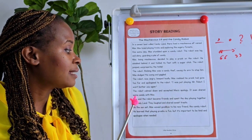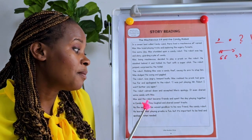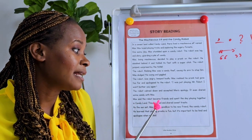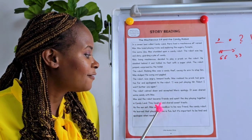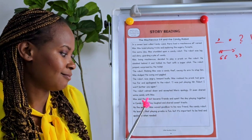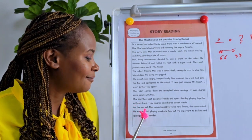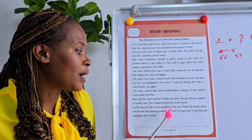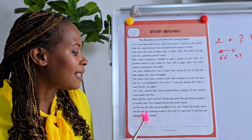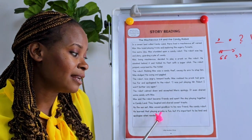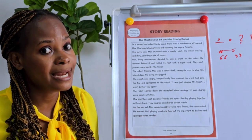The robot even shared some candy with Max. Max and the robot became friends and spent the day playing together in Candyland. They loved and shared sweet treats. As the sun set, Max waved goodbye to his new friend the candy robot. He learned that playing pranks is fun, but it's important to be kind and apologize when you go too far.